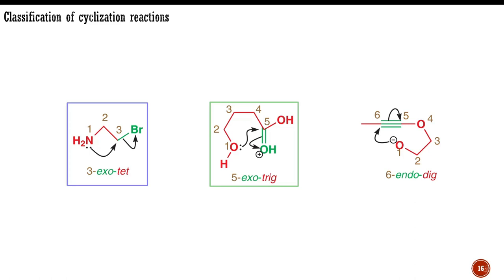The ring being formed has five members, the breaking carbon-oxygen bond is outside the new ring and is exo, the carbon being attacked is a trigonal atom abbreviated as trig. This system places the second cyclization as 5-exo-trigonal.